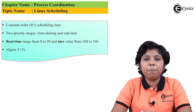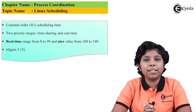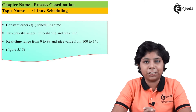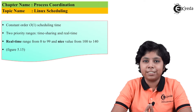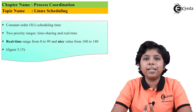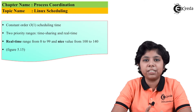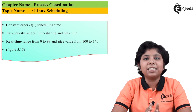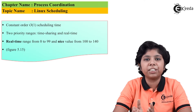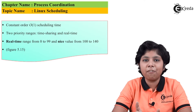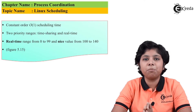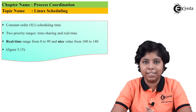During the development of the version 2.6 kernel, the scheduling algorithm was revised. On the release of version 2.6.23, the Linux kernel adopted the Completely Fair Scheduling algorithm, or CFS, as its default scheduling algorithm.